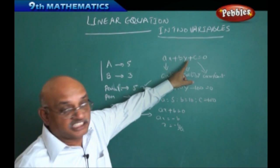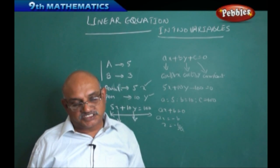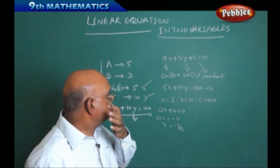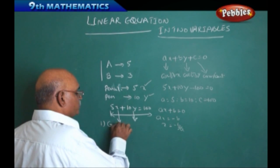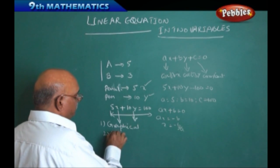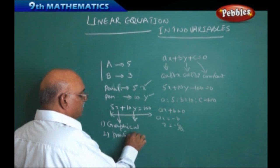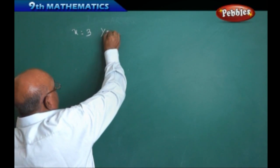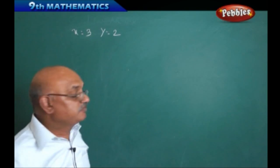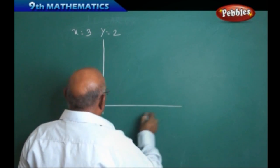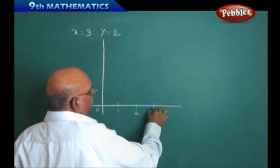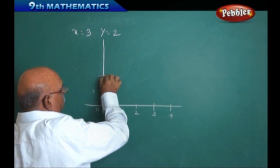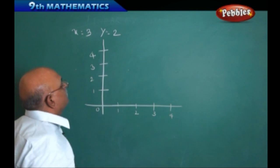Our focus today is on the applications of ax + by + c = 0 in real-life situations and in numerical problems. The chapter covers, first, graphical representation of two variables, and second, practical situation cases. For example, in a graphical representation, if x = 3 and y = 2, on the x-axis we have units 0, 1, 2, 3, 4 marked.